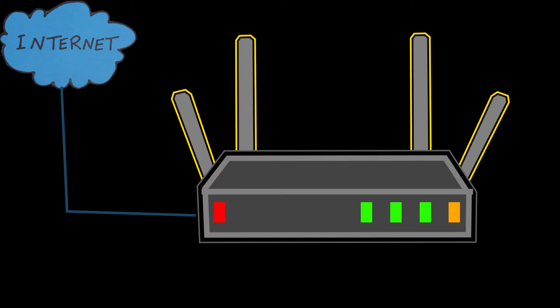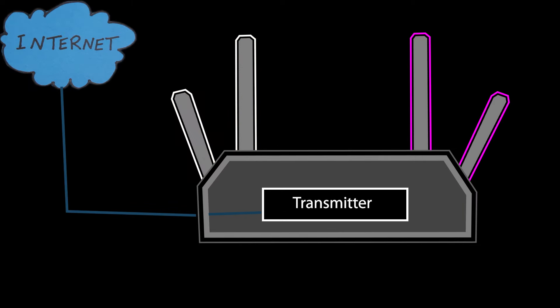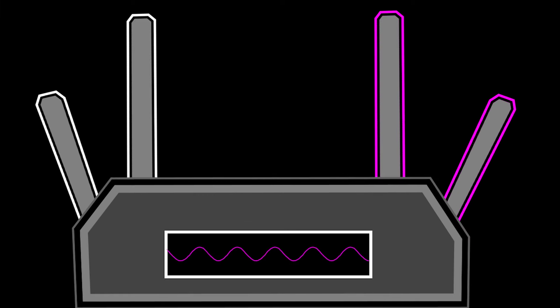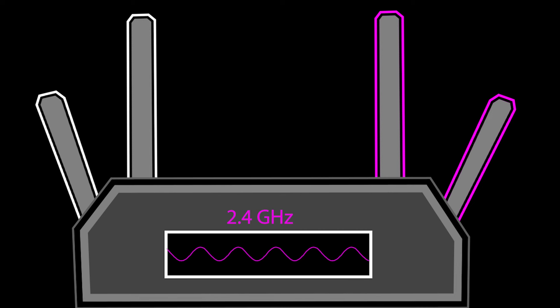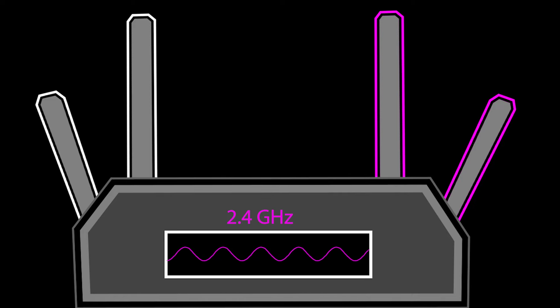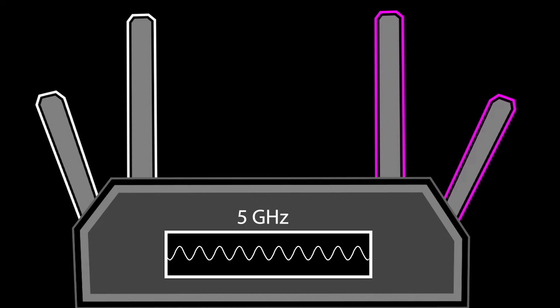Before I do that, let's quickly talk about how a device like that generates wireless signals in the first place. In a wireless router or access point there is a transmitter, which is the initial component in the creation of the wireless signal. When the transmitter receives data, it begins generating an AC signal. This AC signal determines the frequency of the transmission — for example, for a 2.4 GHz signal the AC signal oscillates around 2.4 billion times per second, and for a 5 GHz signal it oscillates 5 billion times per second.